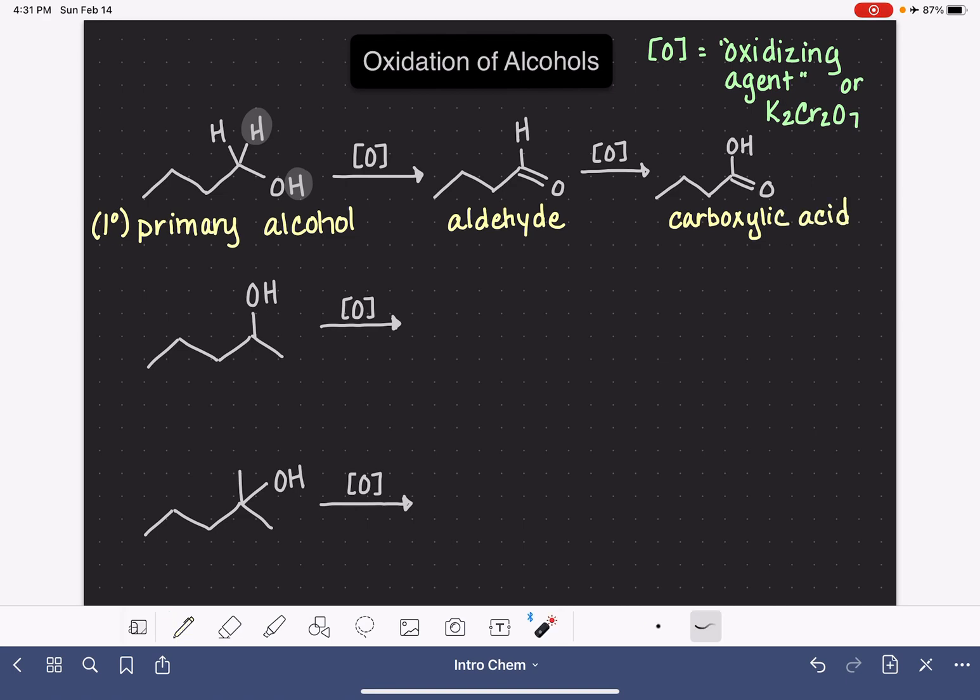Now the second type of reaction that we're looking at here is a reaction with what we would call a secondary alcohol. The secondary alcohol is one where the OH group is attached somewhere on the inside of the carbon chain. Specifically, the OH group is attached to a carbon atom that has two carbon-carbon bonds, so there's two carbons attached to this carbon.